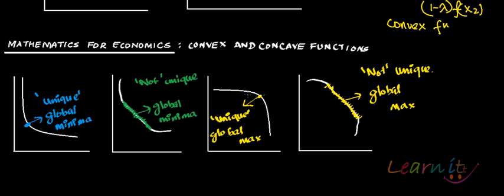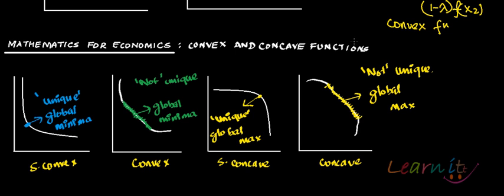Just writing it for the sake of completeness: this is a strictly convex function, this is a convex function, this is a strictly concave function, and this is a concave function. If you have a strictly convex function, you get a point of unique global minima. If you have a convex function but not strictly convex, you get global minima but not unique. If you have a strictly concave function, you get unique global max. If you have a concave function but not strictly concave, you get global max but not unique.